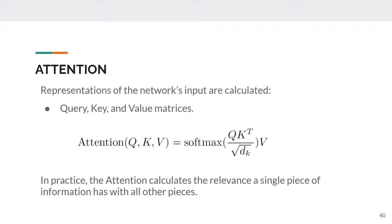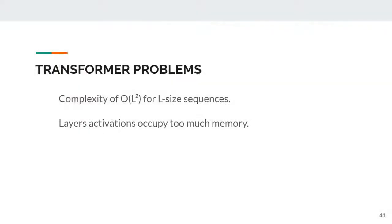In an attention mechanism, representations of the network's input are calculated: the query, key, and value matrices. The attention process performs the softmax of the normalized multiplication of the query and transposed key matrices, then multiplies the resulting score with the value matrix. In practice, attention calculates the relevance a single piece of information has with all other pieces. However, the transformer has two major problems: the complexity is quadratic, and the layer activations occupy too much memory — these activations are stored for backpropagation during gradient computation.